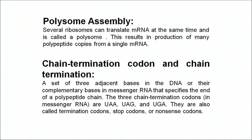The chain is terminated when a set of three adjacent bases in the DNA — or their complementary bases in messenger RNA — specifies the end of a polypeptide chain. The three chain terminator codons UAA, UAG, and UGA — also called stop or nonsense codons — do not code for any amino acid, so the polypeptide chain is complete once they are encountered.